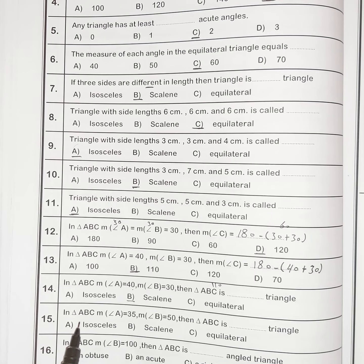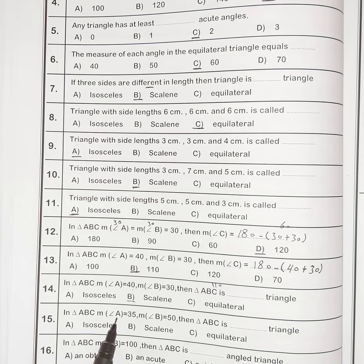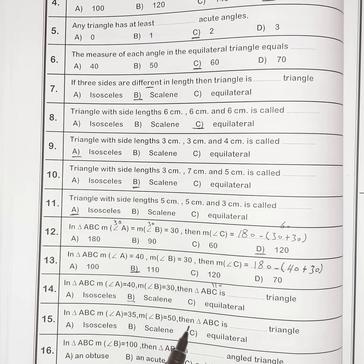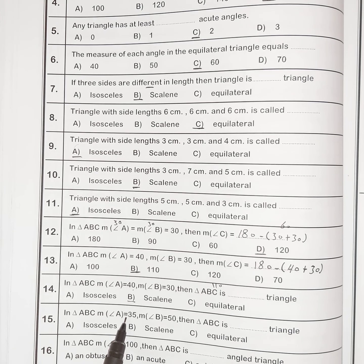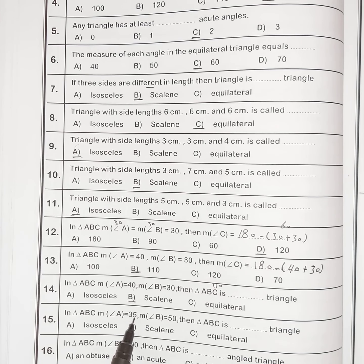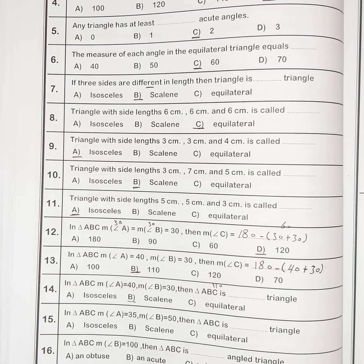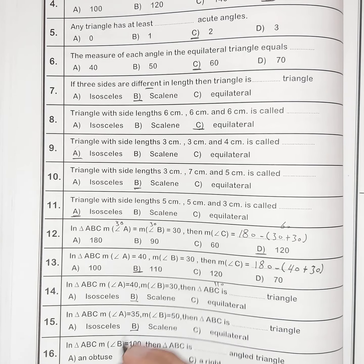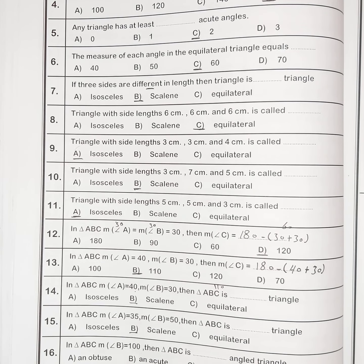Number fifteen: in triangle ABC, the measure of angle A equals 35 degrees and the measure of angle B equals 50 degrees, then the measure of angle C equals 95 degrees. This triangle is a scalene triangle because all three angles are different.